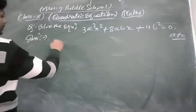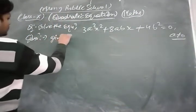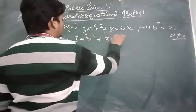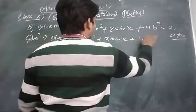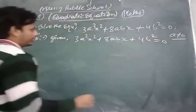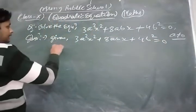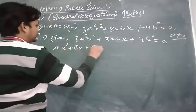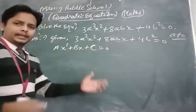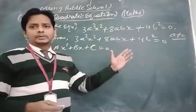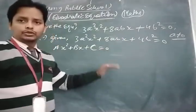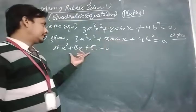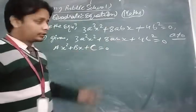Comparing with the general form Ax² + Bx + C = 0 — we use capital A, B, C to avoid confusion with the small a and b already in the question — we find: capital A = 3a² (coefficient of x²), capital B = 8ab (coefficient of x), and capital C = 4b².